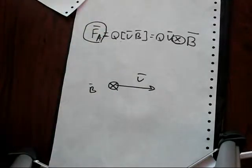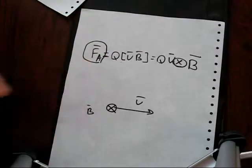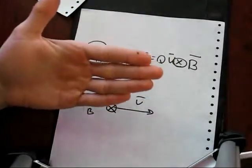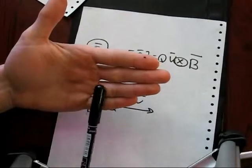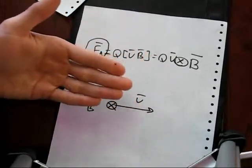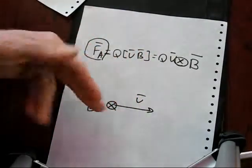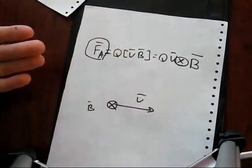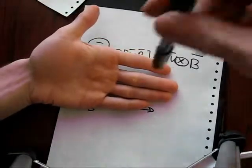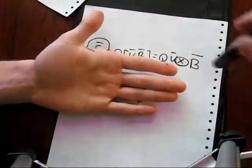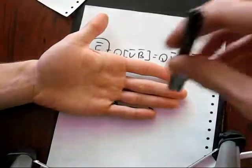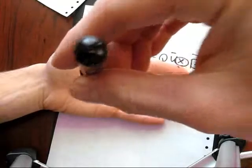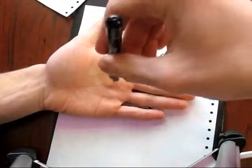If I want to identify the direction of Ampere force, I take my left hand. These fingers should be directed as the direction of the velocity vector. I have to deposit this hand in such form that the vector of magnetic field should come in the surface of my hand.